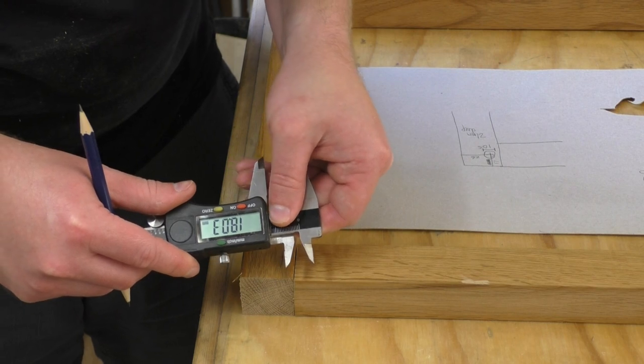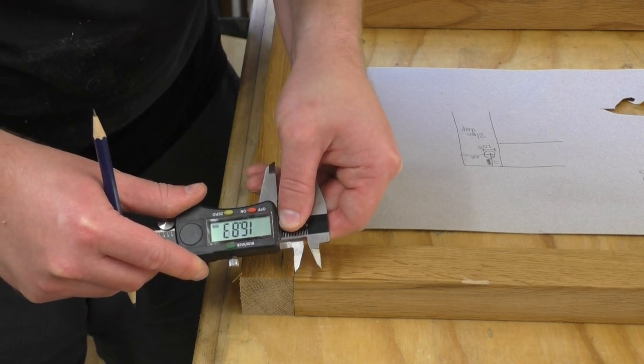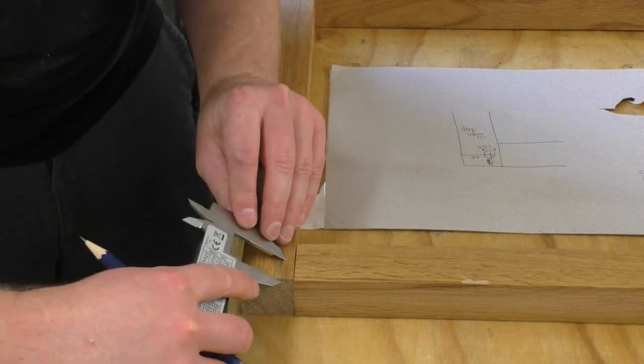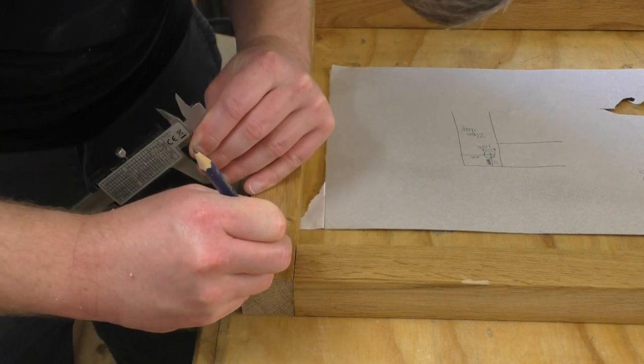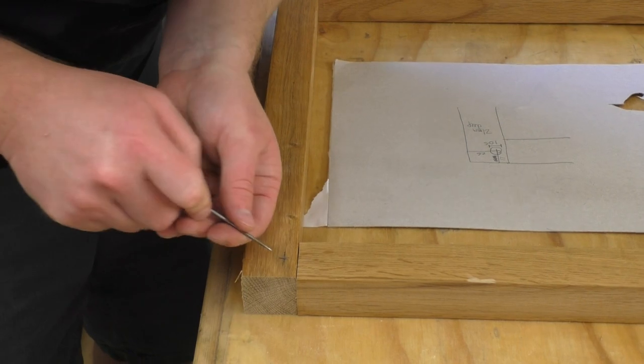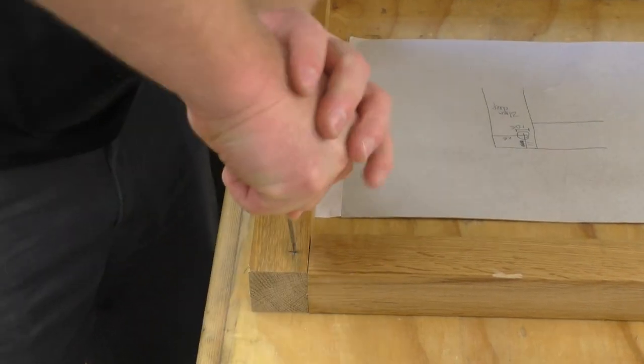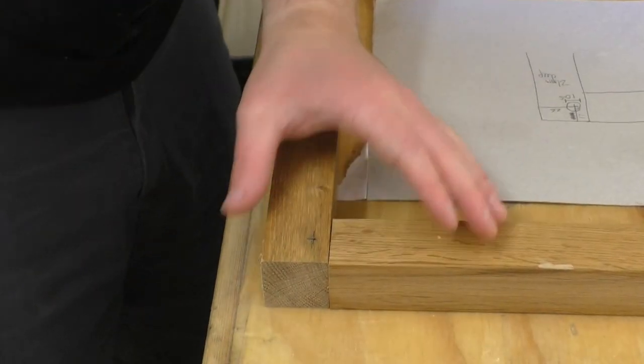And then I can set the calipers to 16 and a half millimeters and scribe another line. And now I'm just going to use an awl to start a hole where I need to drill.